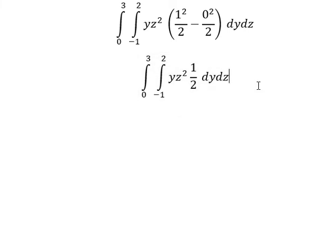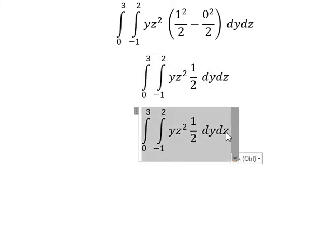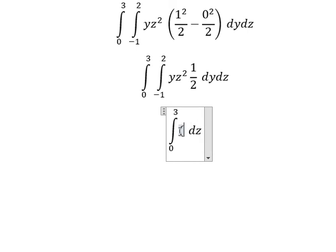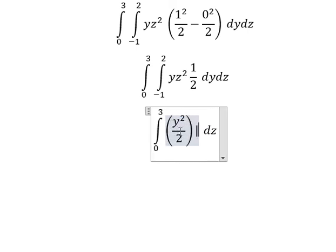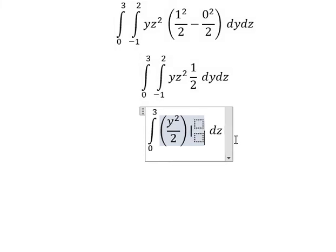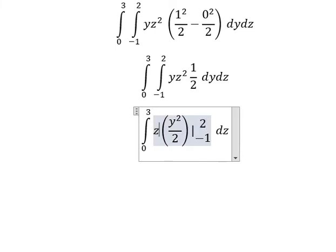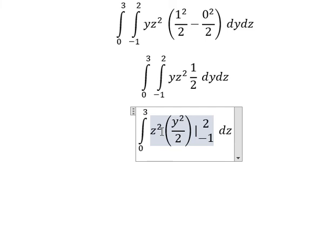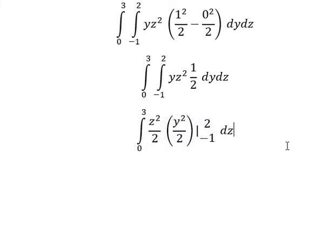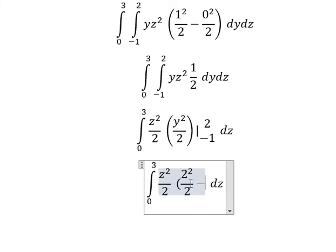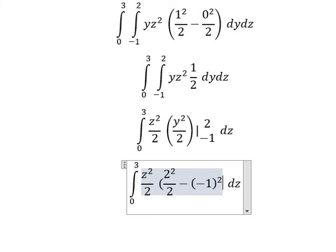The integration of y gives us y squared over 2. I will put the bounds from negative 1 to positive 2, and we have z squared with 1 over 2. This gives us 2 squared over 2 minus negative 1 to the power of 2 over 2.